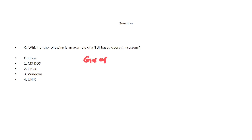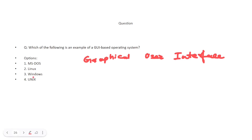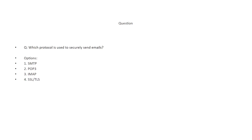Which of the following is an example of a GUI-based operating system? GUI stands for graphical user interface. The options are: MS-DOS, Linux, Windows, and Unix. The correct answer is Windows — it provides a GUI-based operating system, while the others are more command-based.